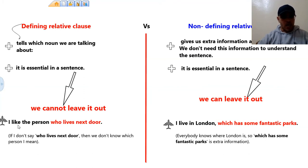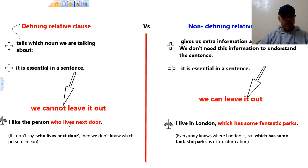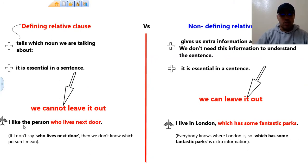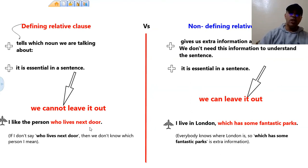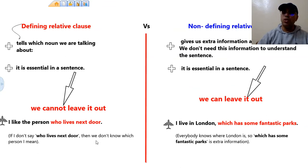Example: "I like the person who lives next door." The relative clause is "who lives next door." If we say "I like the person" — which person are we talking about? The person who lives next door. So here we are talking about a specific person. "Who lives next door" is necessary to the meaning of this sentence. If I don't say "who lives next door," then we don't know which person I mean. So a defining relative clause can't be left out.